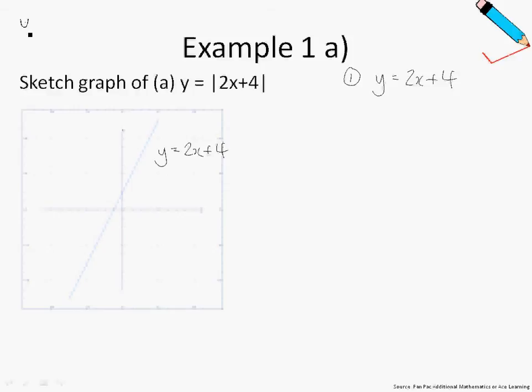Recall that any straight line graph is in the form of y equals mx plus c, where m is your gradient, and c is your y-intercept. In this case, y equals 2x plus 4. The y-intercept should be at the point 4, since c in this case is 4, and the gradient should be 2, i.e. your m is 2. So all we are doing here is to sketch an upward sloping line that cuts the y-axis at the point 4.